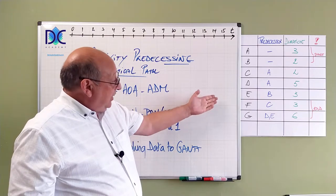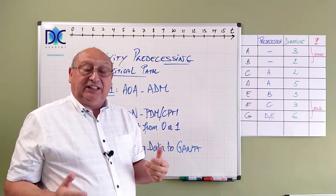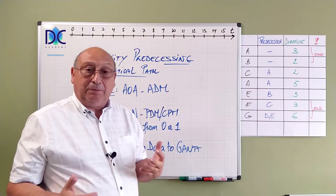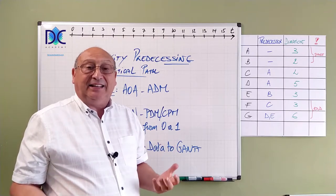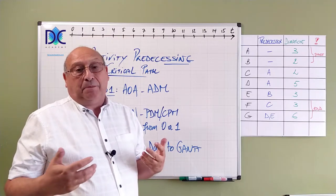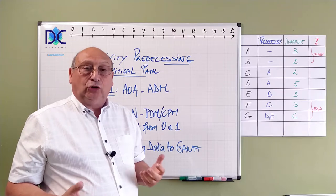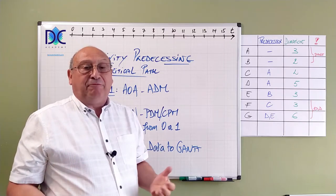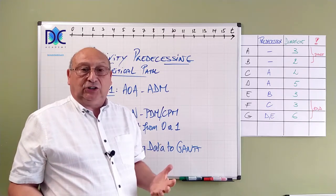The other element is F and G. Those activities have no more successor. It means that they are at the end of the project. Once those two activities have been completed, the project is finished.